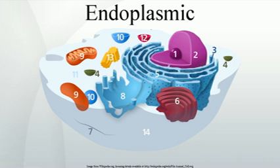There are two types of endoplasmic reticulum: rough endoplasmic reticulum and smooth endoplasmic reticulum. The outer face of the rough endoplasmic reticulum is studded with ribosomes that are the sites of protein synthesis. The rough endoplasmic reticulum is especially prominent in cells such as hepatocytes where active protein synthesis occurs. The smooth endoplasmic reticulum lacks ribosomes and functions in lipid metabolism, carbohydrate metabolism, and detoxification, and is especially abundant in mammalian liver and gonad cells.